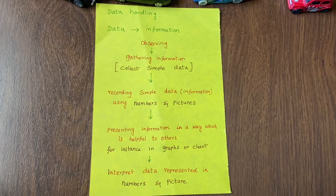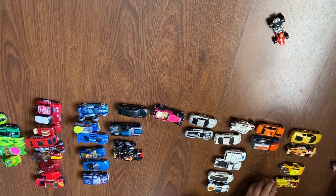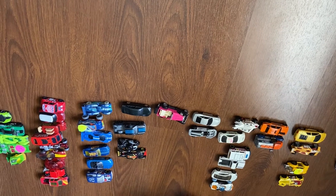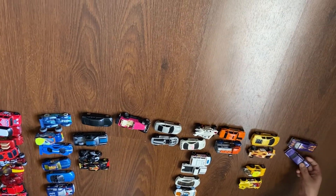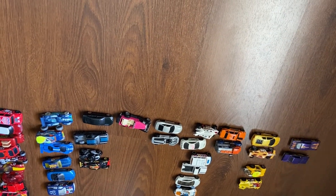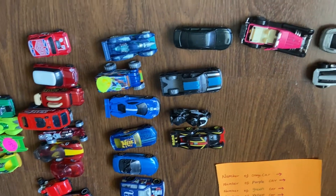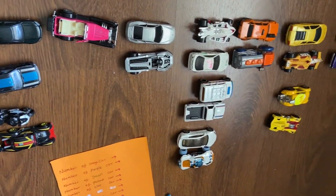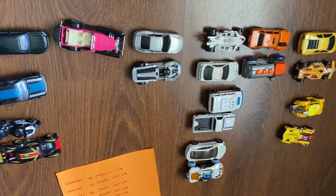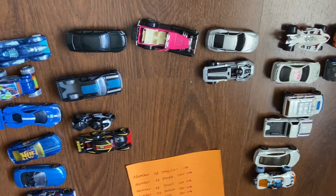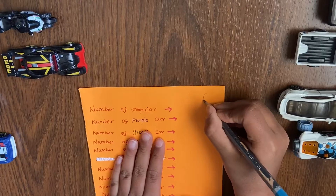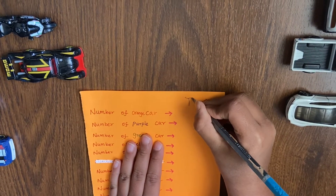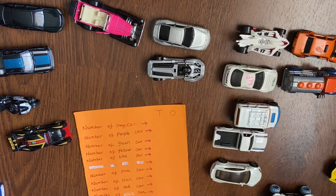I'm going to place this on his learning area. Here he is grouping and sorting all his cars based on colors. Now he is done with sorting and grouping. Then we are going to gather information — like how many orange cars, purple, green, yellow, blue, pink, black, red, white, and gray cars are there. Here he is writing ones and tens.